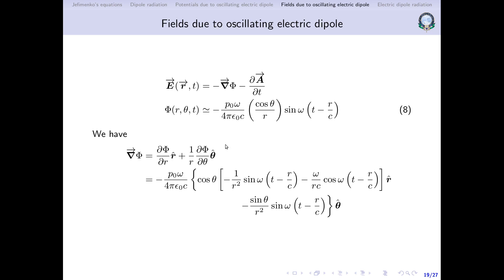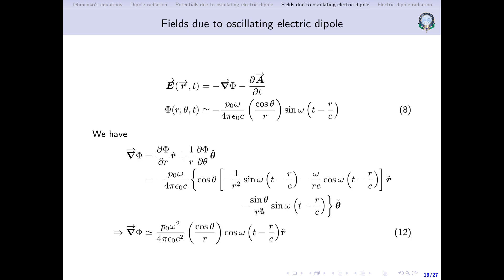Next, differentiating with respect to θ: cos θ differentiates to −sin θ, giving a θ-cap term with a factor of 1/r². So we have three terms — two varying as 1/r² and one varying as 1/r. Applying the far-field approximation, we neglect the 1/r² terms and keep only the 1/r term. This is the gradient of φ — call it equation 12.